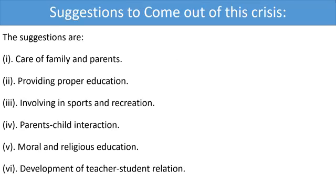Now, suggestions to come out of this crisis. How can we prevent our children and teenagers from committing crimes so that they can live a healthy life, mentally and physically, continue their studies, and become good citizens? The suggestions are: care of family and parents, providing proper education, involving in sports and recreation, parent-children interaction, moral and religious education, and development of teacher-student relationships.